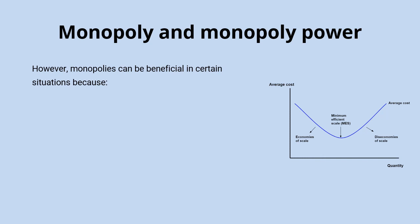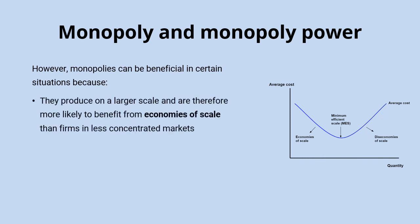However, there are some benefits that monopoly power can bring — not just for the firm but for consumers as well. Firms with monopoly power are likely to benefit from economies of scale because they are producing on a larger scale of output, meaning their cost per unit is likely to be lower. Looking at a U-shaped average cost curve, firms in a competitive market produce at relatively low output levels, but as firms grow and develop monopoly power they increase their scale of production and benefit from economies of scale. This may even mean some consumers benefit from lower prices as a result of the firm's lower average costs.